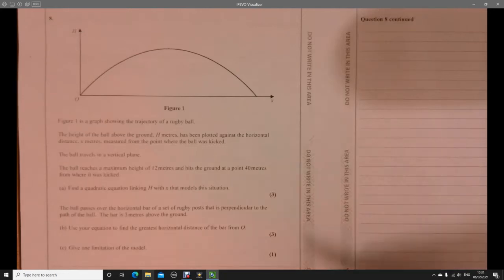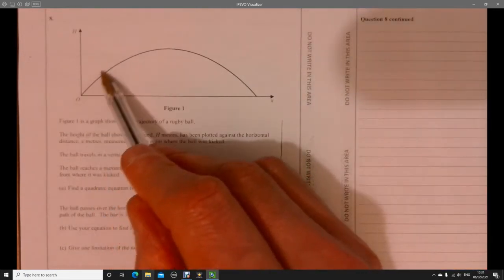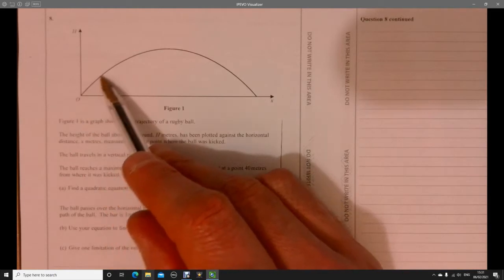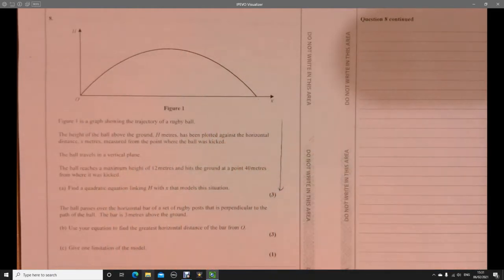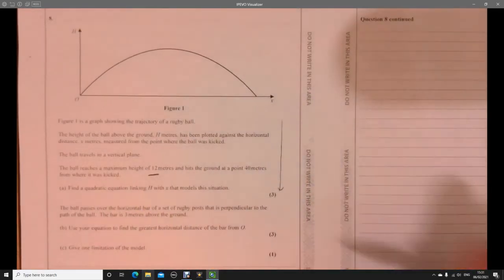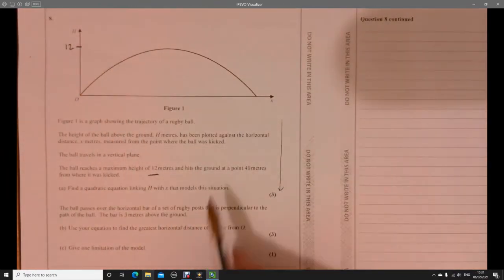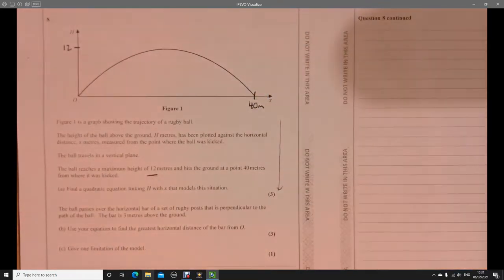Question 8. So we've got a lot of information here. Basically, we're told we've got the path of a rugby ball. So it's been kicked, goes above the ground, and it's going to pop back down over here. Let's have a look and see what information we're told. The key bits of information that we're told is that it reaches a maximum height of 12 metres, and it hits the ground at 40 metres from where it starts.